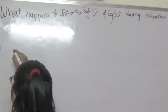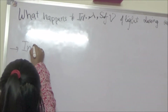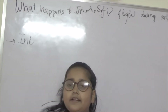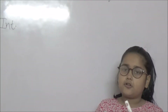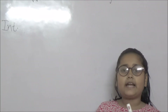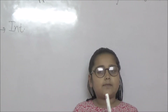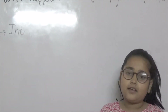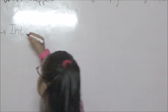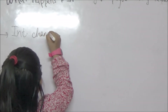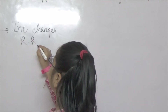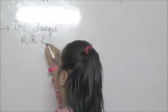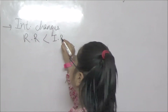First of all, we will talk about intensity. What is intensity? Intensity means brightness. So if I say that light has high intensity, that means light is brighter. The intensity changes during refraction — the intensity of the refracted ray is less than that of the incident ray.